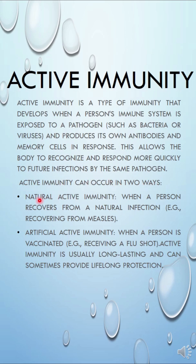Natural active immunity occurs when a person recovers from a natural infection — for example, recovering from measles. Artificial active immunity occurs when a person is vaccinated — for example, receiving a flu shot. Active immunity is usually long-lasting and can sometimes provide lifelong protection.